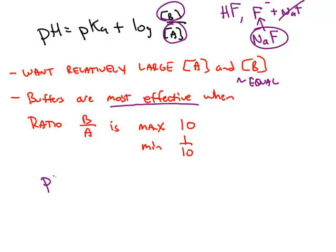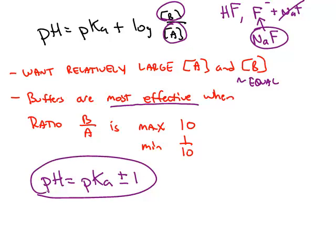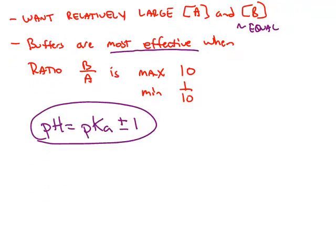And if you plug in the two extremes, you'll end up with a pH of your buffer either one unit of pH higher than the pKa or one unit lower than the pKa.